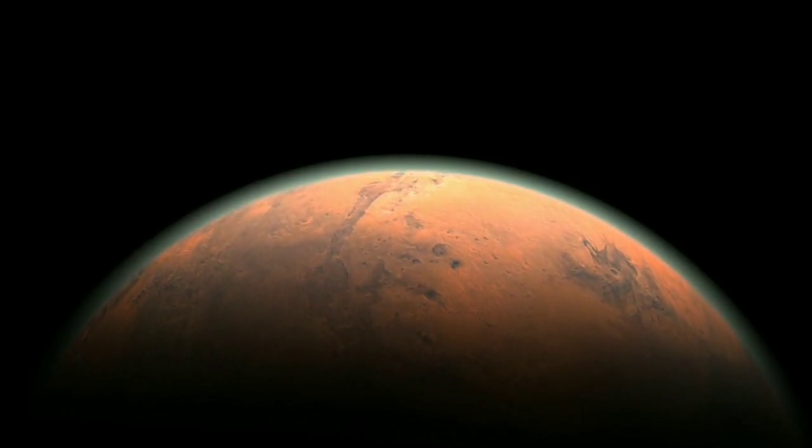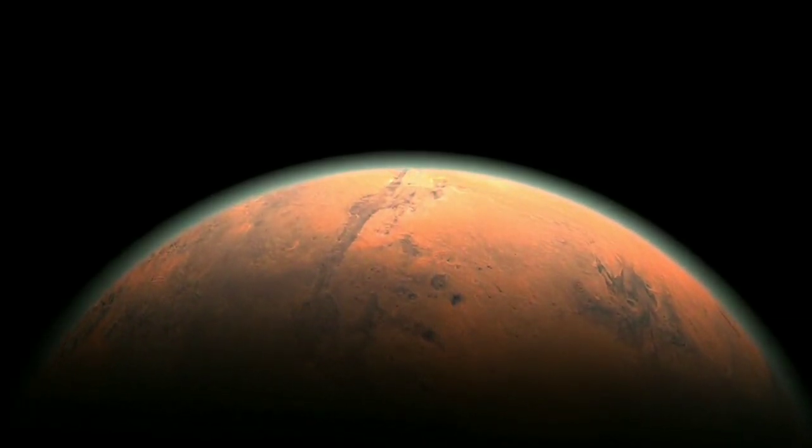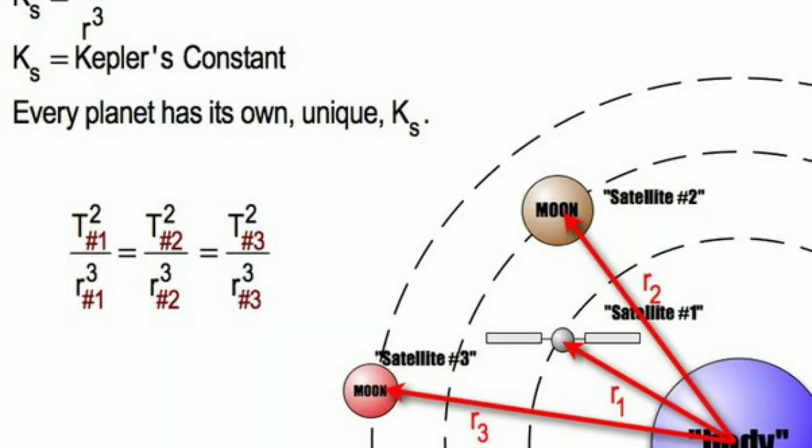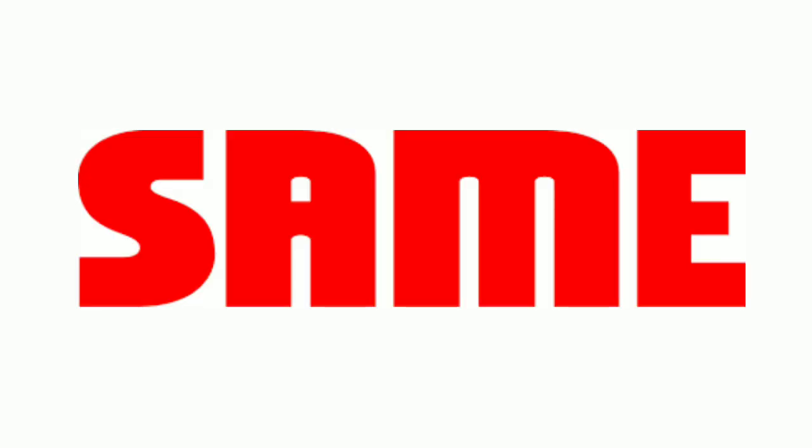Let's take the example of Mars. Its period is 5.93 × 10⁷ seconds and its average distance from the sun is 2.278 × 10¹¹ meters. If we try this two, that is T² by R³, we will get the same number that is 2.975 × 10⁻¹⁹, approximately same.